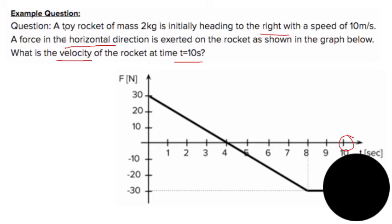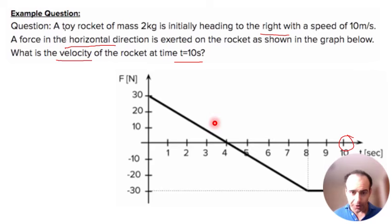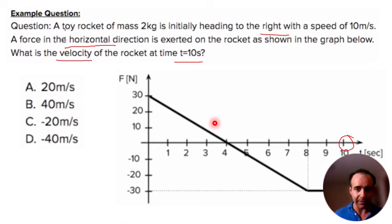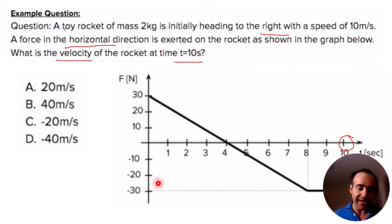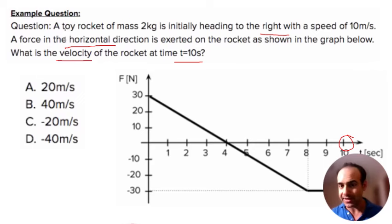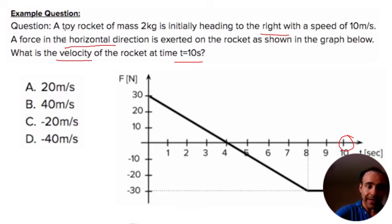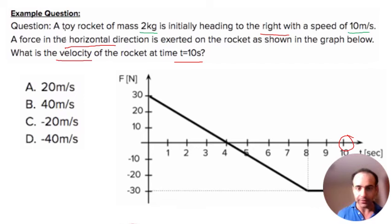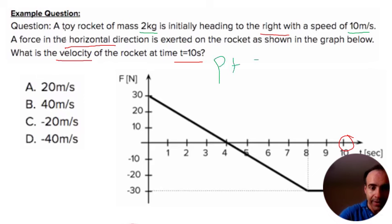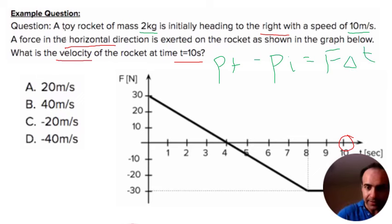This is a slightly longer problem. First, set up the equation. We've been provided a force times delta T in the form of a graph, and we care about the initial and final velocities. We'll use the full impulse equation: P-final minus P-initial equals the impulse, which is F times delta T.